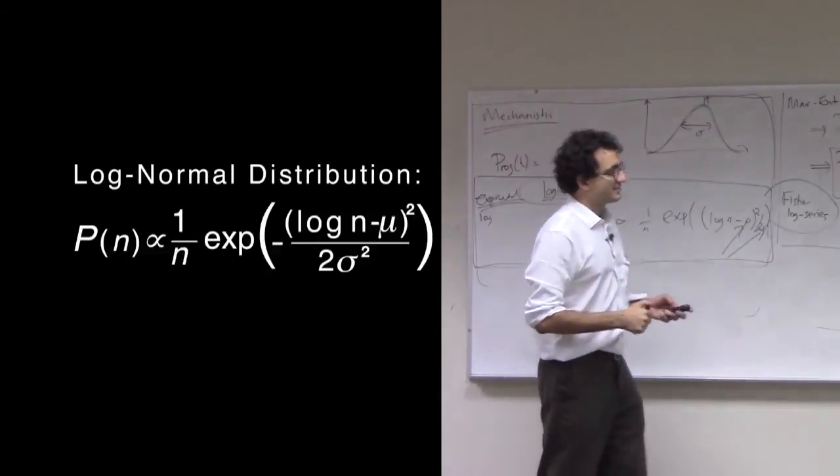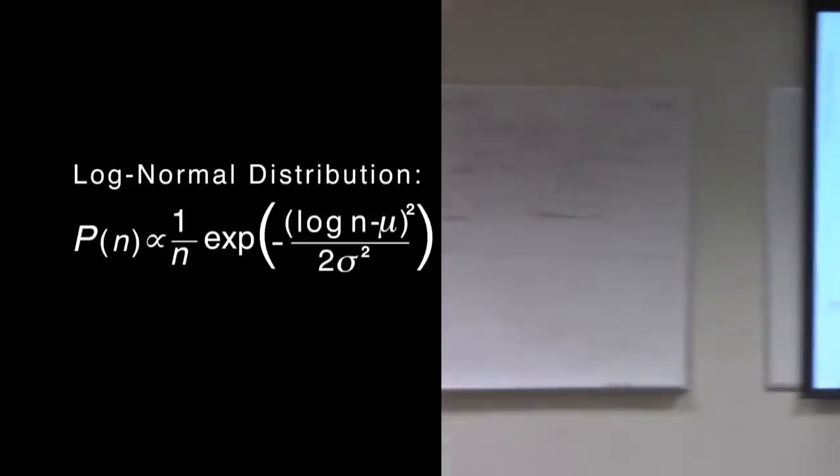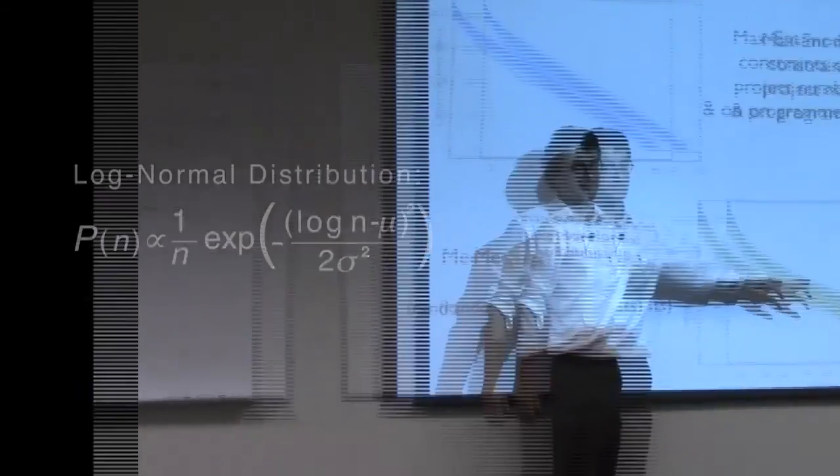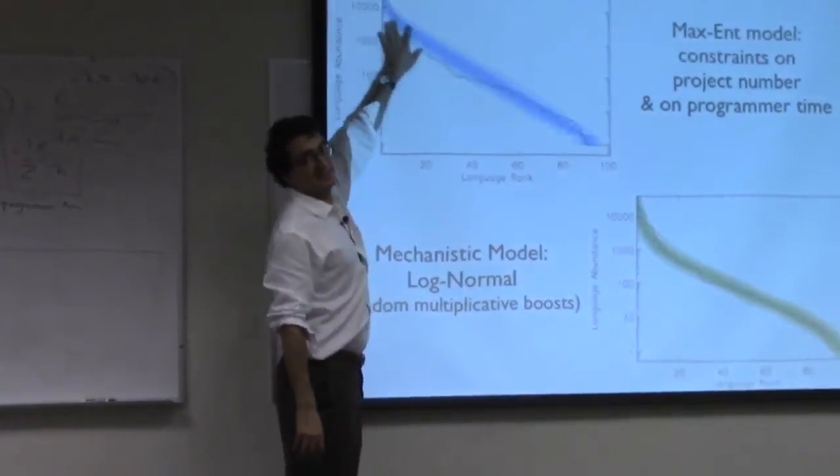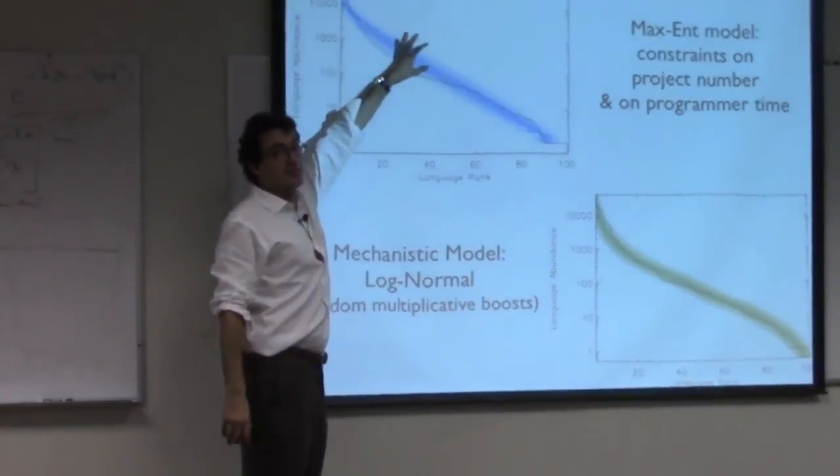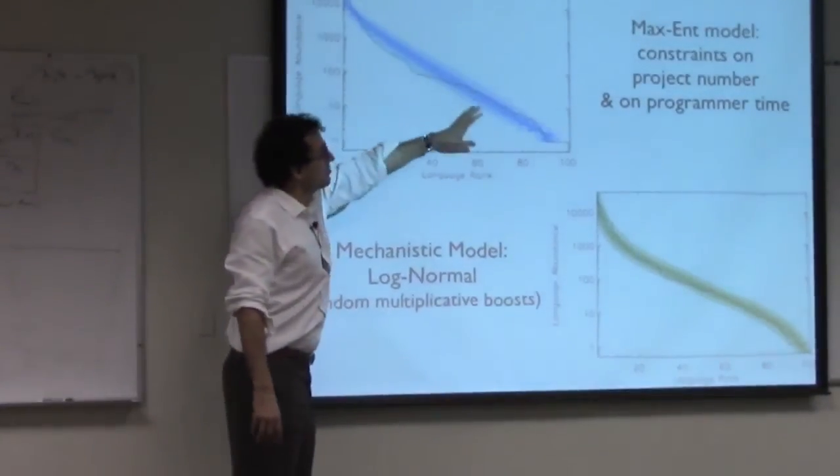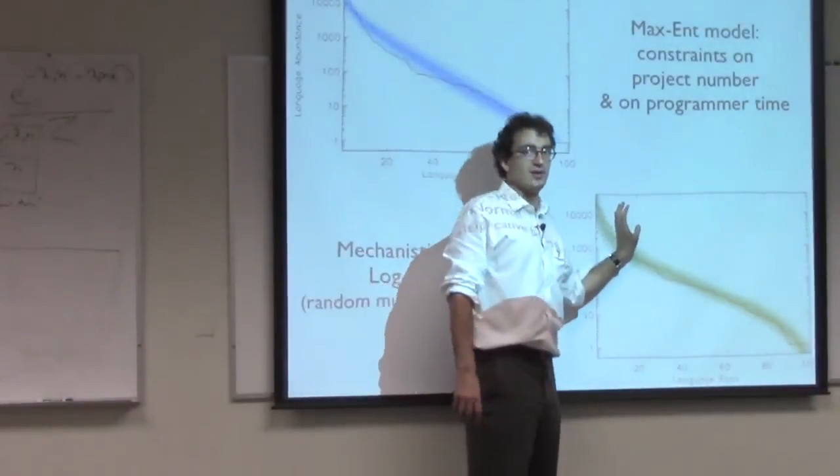If you do that, you find that the mechanistic log-normal model looks pretty good as well. We were impressed by how well the blue line fit this distribution compared to the red exponential model - the Maxent model constraining only n, that was the red model. Here the blue model does well - this is the Fisher log series.